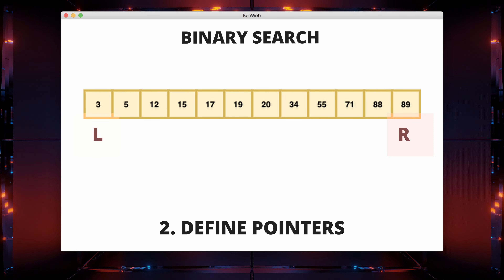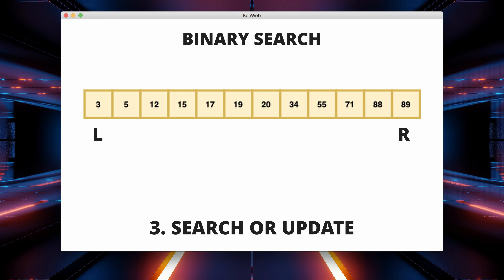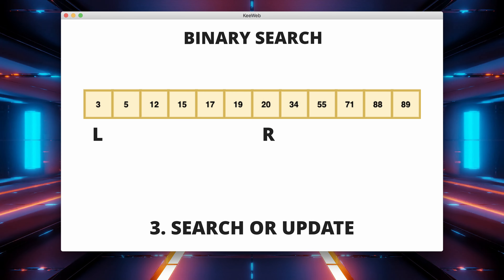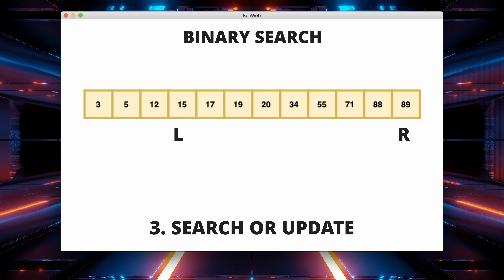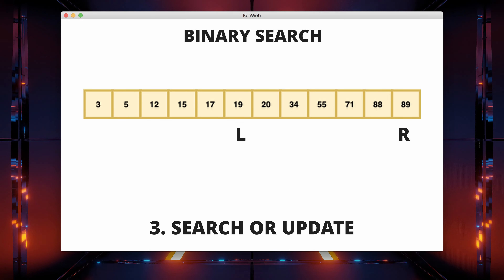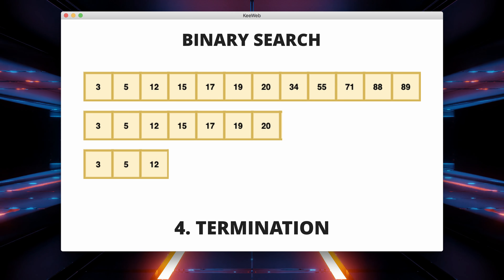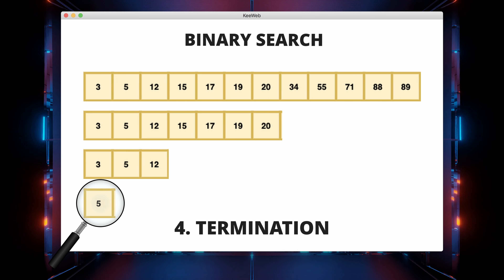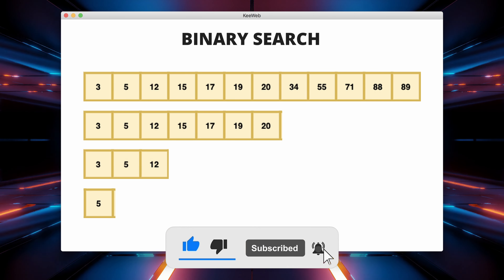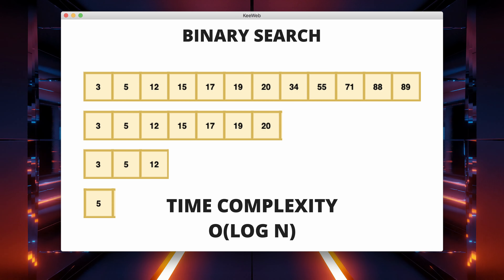Then, search or update: if the target is in the middle, you've found the answer. If the target is less than the middle element, discard the right half of the search space. If the target is greater than the middle element, discard the left half. Repeat these steps until the target is found or the search space is empty. Termination: the algorithm terminates when the search space is empty, indicating the target is not in the array, or when the target is found. Binary search is particularly efficient for sorted data structures because it eliminates half of the remaining elements at each step, leading to a time complexity of O(log n), where n is the size of the array.